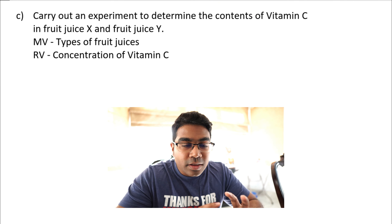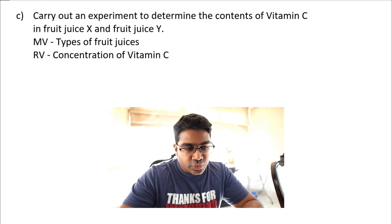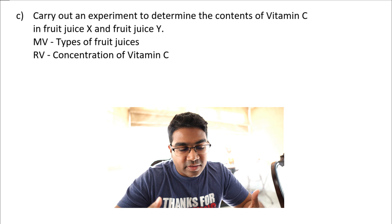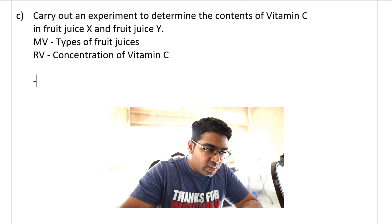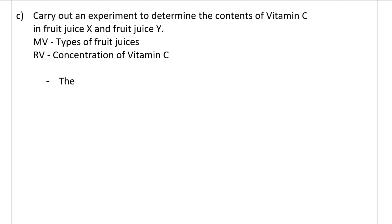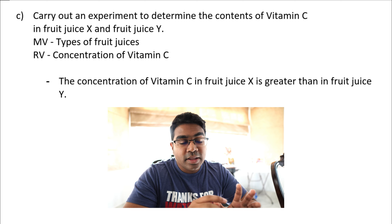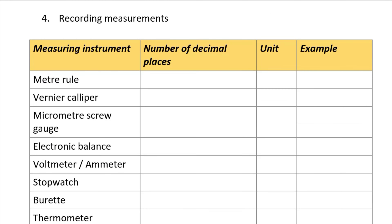For the biology example, the manipulated variable is types of fruit juices, which is not quantitative, so we again use the conclusion format: 'The concentration of vitamin C in fruit juice X is greater than in fruit juice Y.' This depends on the outcomes of your experiment.